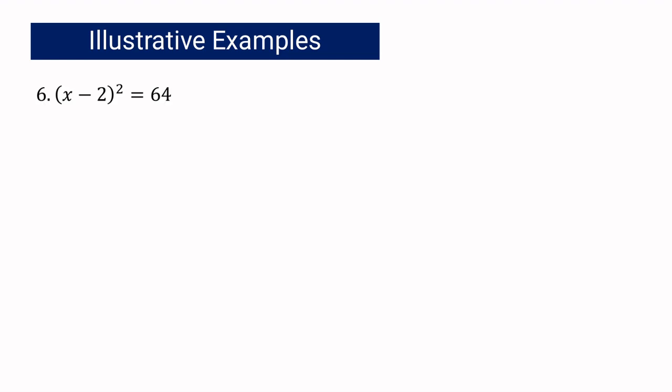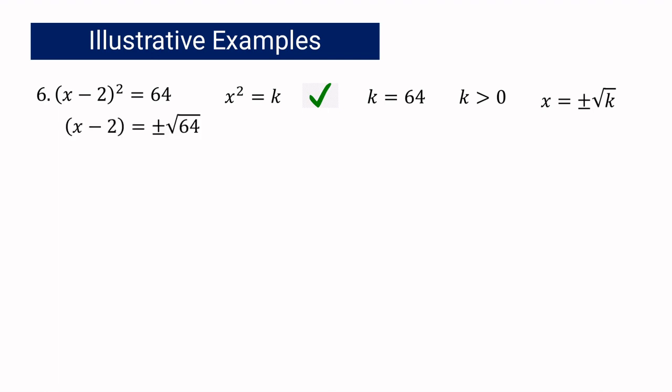Let us consider the next example: quantity x minus 2, squared, equals 64. Is it written in x squared equals k? Yes. This time the base of the quadratic term is a binomial, which is x minus 2. We can still say it is written in x squared equals k; it is just that the base is a binomial. So k equals 64 and it is greater than 0. Following the principle, x minus 2 equals positive or negative square root of 64, which gives x minus 2 equals positive or negative 8.